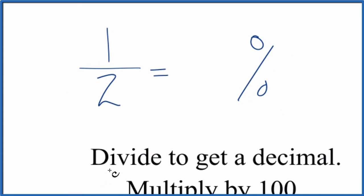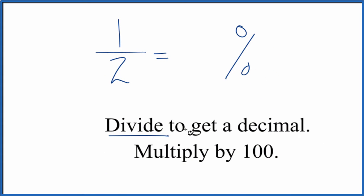And the way we do that, we divide one by two to get a decimal. That decimal, we then multiply it by 100. That gives us our percentage.